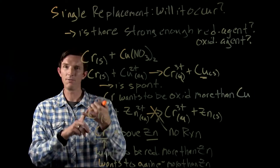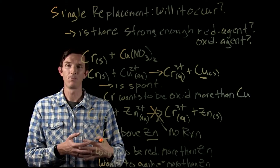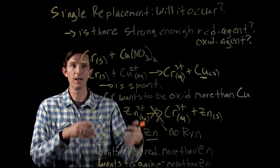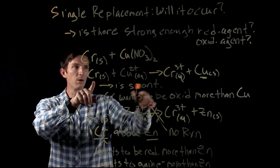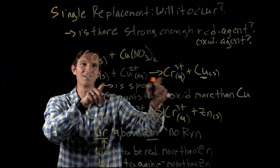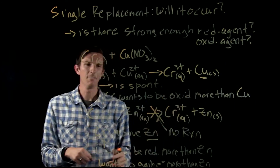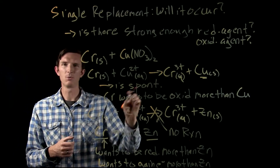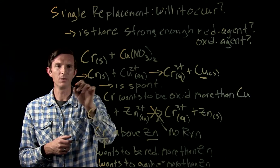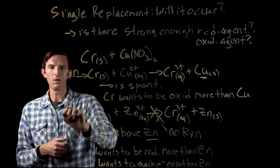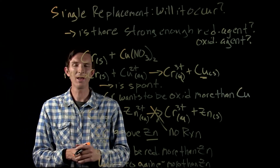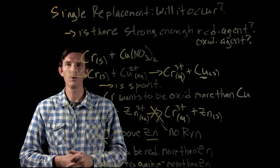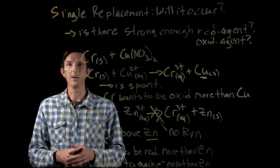In order to identify if a reaction happens, we look at the activity series table or the standard reduction table. It tells us what wants to be reduced more and what wants to be oxidized more. If we have the correct combination — like chromium wanting to be oxidized and copper wanting to be reduced — the reaction is spontaneous. Once we've determined that, the last step is to balance the equation. It all comes down to whether something has a stronger pull and wants to gain electrons more than something else does. Hopefully this helps clarify that, and we'll go ahead and talk about this in more detail in class.